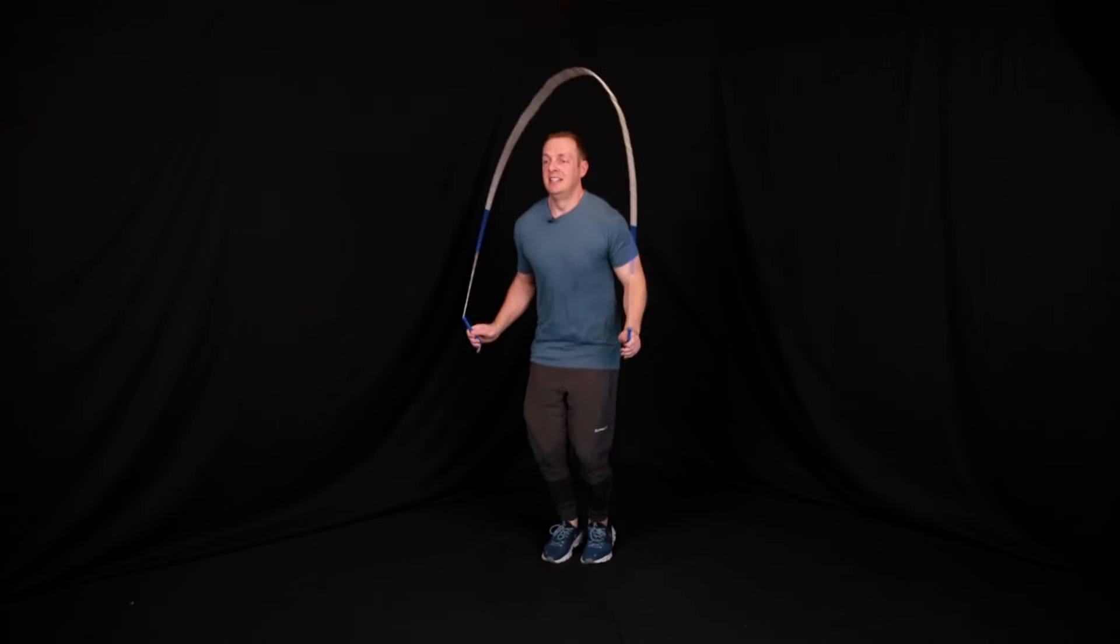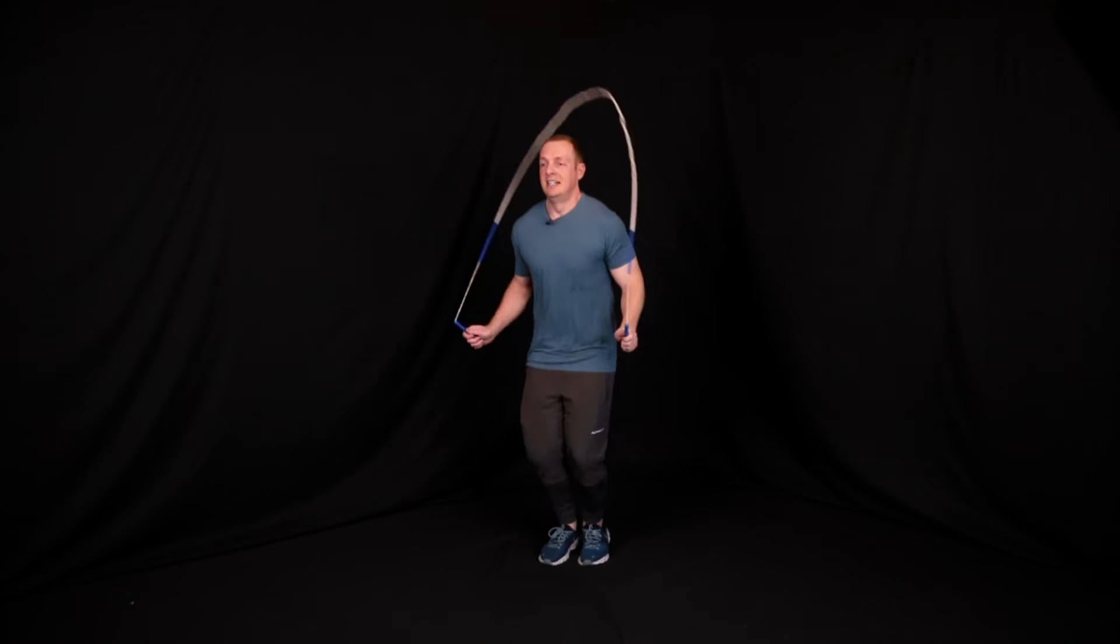And the last main thing that you wanna be thinking about is doing the slowest possible double you can, and everything that we've said so far actually leads up to this, but you wanna think of doing a very slow double-under, not super fast and just whipping the rope around.